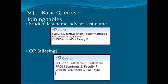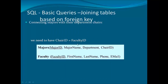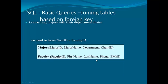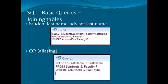We can also use aliasing. Aliasing is a technique in which we give a shorter name to a table. For example, we give the student table the alias 'S' and the faculty table the alias 'F'. So we write S.last_name and F.last_name — where F means the faculty table and S means the student table — to fetch records from both tables.